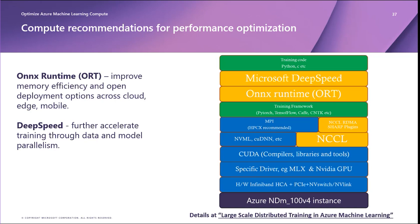DeepSpeed also significantly improves compute efficiency to speed up training 2 to 7x by scaling data parallelism through optimizing intra and inter-communication bandwidth across arbitrary numbers of GPUs. As a best practice in your training script, apply ORT optimizations first and then DeepSpeed after if using both.